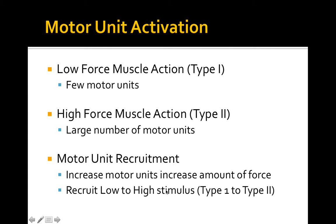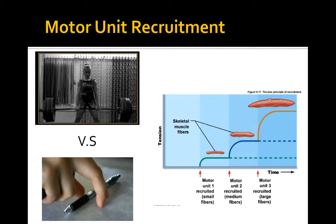Motor units recruit from low to high — from those more sensitive to stimulus to those resistant that need a higher impulse. For example, look at picking up a pen versus a heavy deadlift. When picking up a pen, you don't need large muscle fibers firing — just the small ones. As the weight increases, more tension must develop. Motor units start firing: still not enough with type 2A — now type 2X fires the bigger muscle fibers, and you break the plane of contact between the weight and the ground.